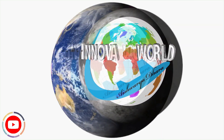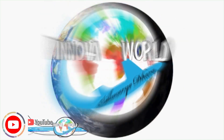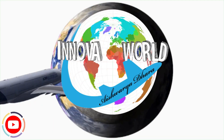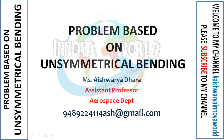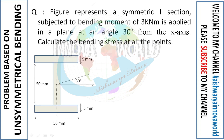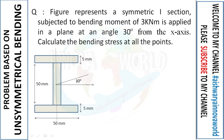Welcome to Innova World. Hey guys, once again welcome back to my channel. Today our topic is problems based on unsymmetrical bending. Here comes a question: the figure represents a symmetric I-section subjected to a bending moment of 3 kilo-Newton meters applied in a plane at an angle of 30 degrees from the x-axis. Calculate the bending stress at all the points.